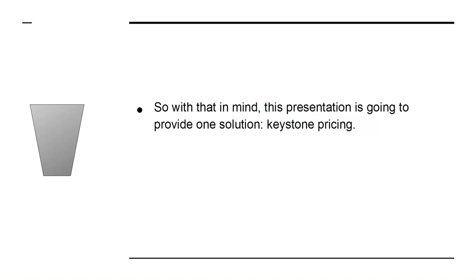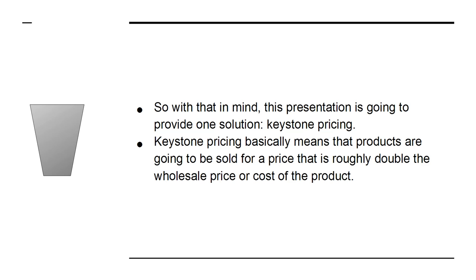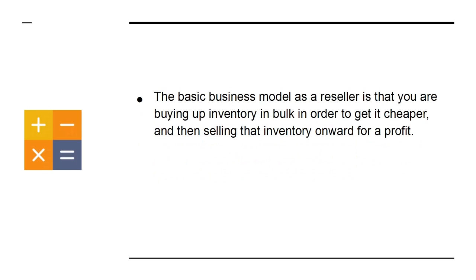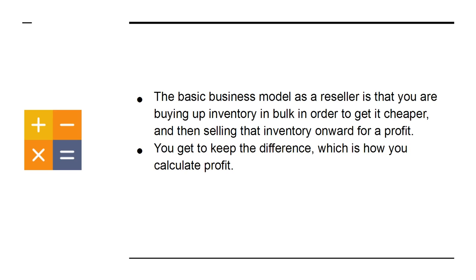So with that in mind, this presentation is going to provide one solution: Keystone Pricing. Keystone Pricing basically means that products are going to be sold for a price that is roughly double the wholesale price or cost of the product. The basic business model as a reseller is that you are buying up inventory in bulk in order to get it cheaper, and then selling that inventory onward for a profit. You get to keep the difference, which is how you calculate profit.